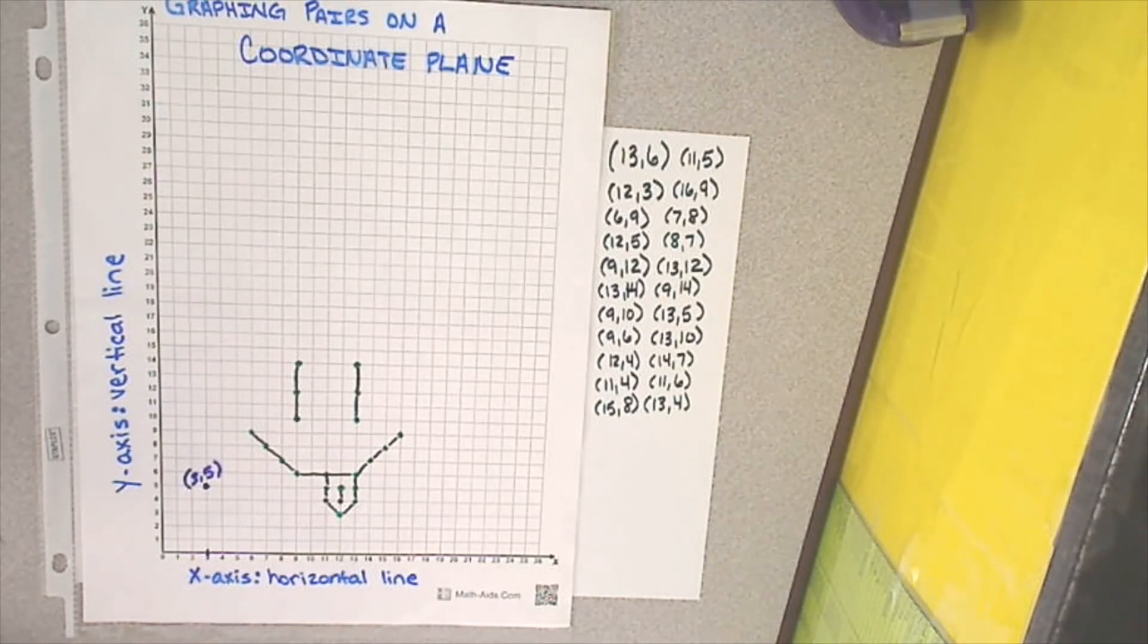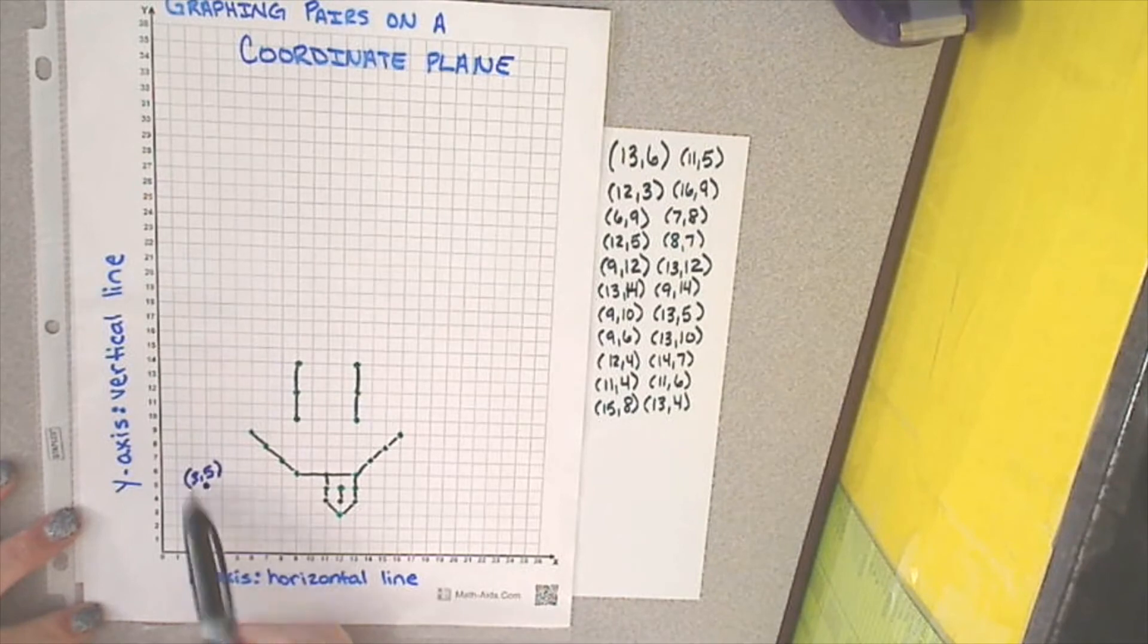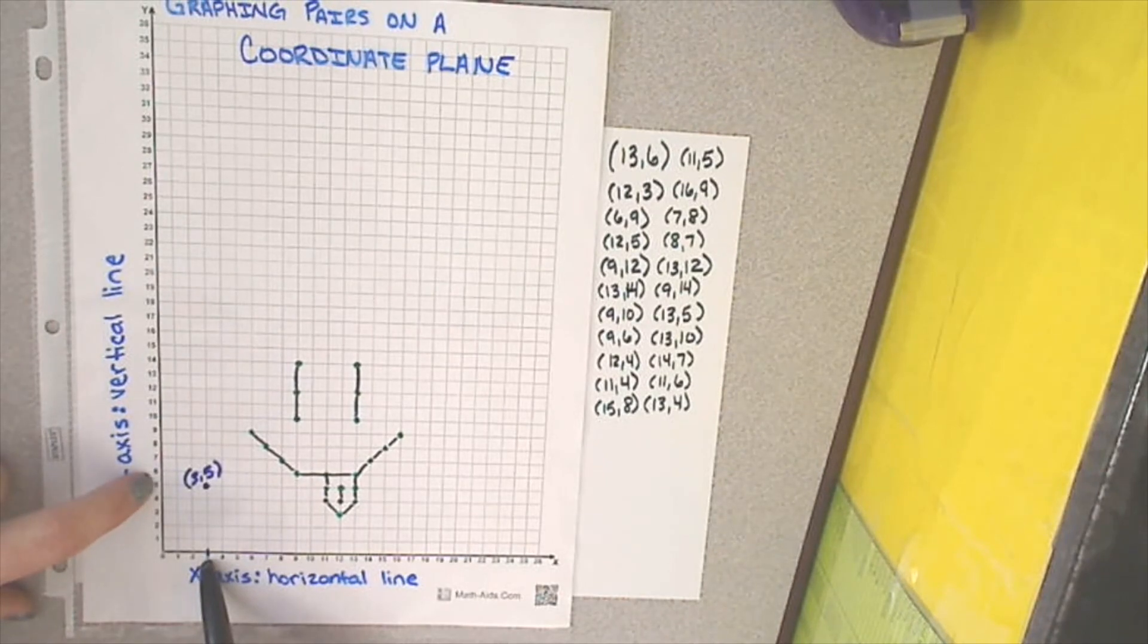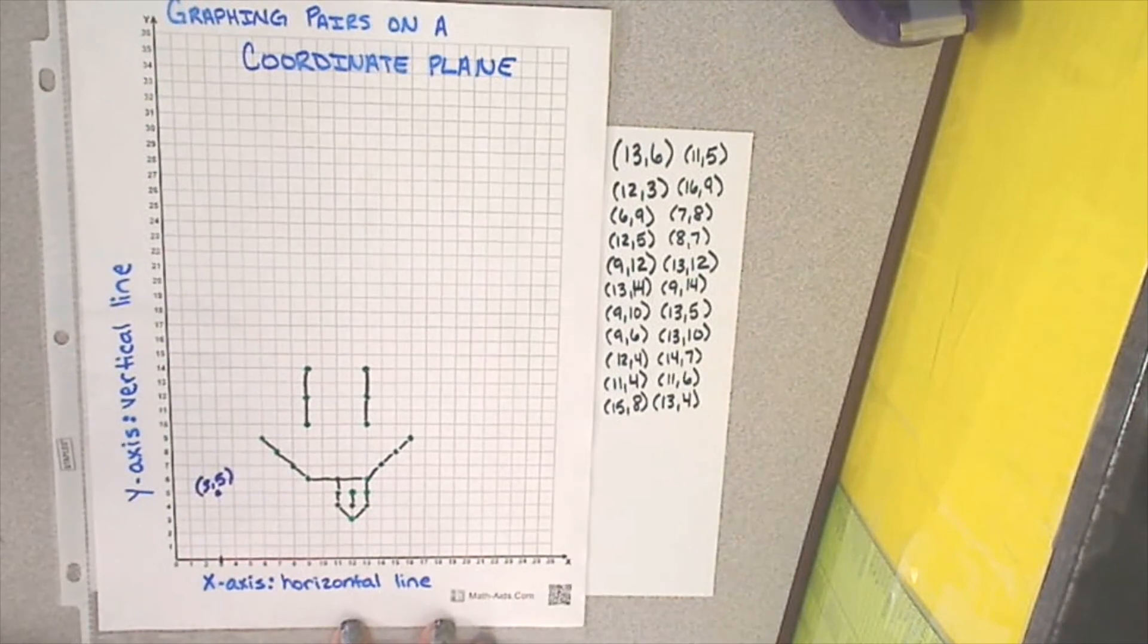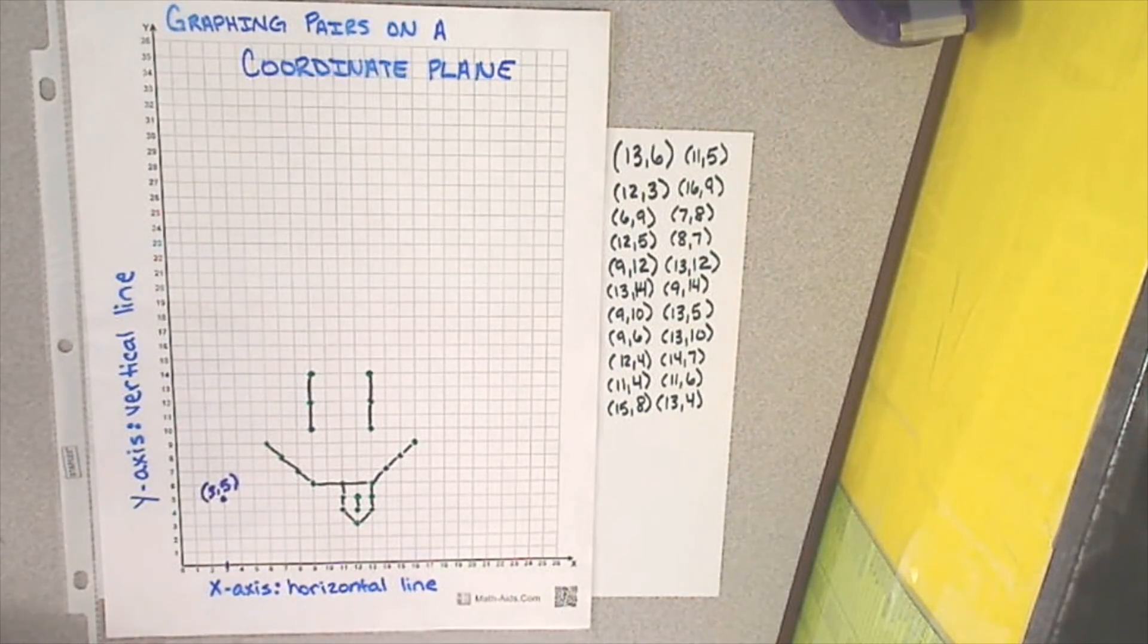All right, so that is graphing pairs on a coordinate plane. When you look at the pair, starting with your first number, you find that number on your x-axis. Second number you find on your y-axis. And you find the lines where those two numbers intersect. Easy peasy, lemon squeezy. Thank you guys so much for watching. I appreciate it. If you have any questions, let me know. We'll see you next time.